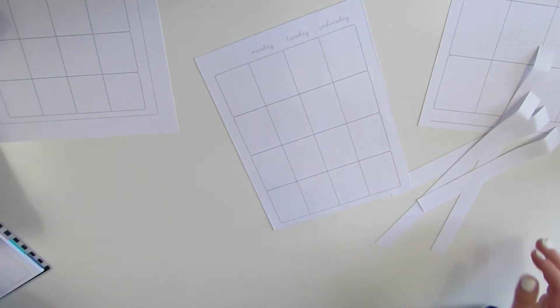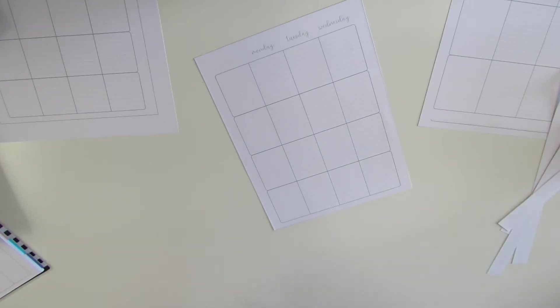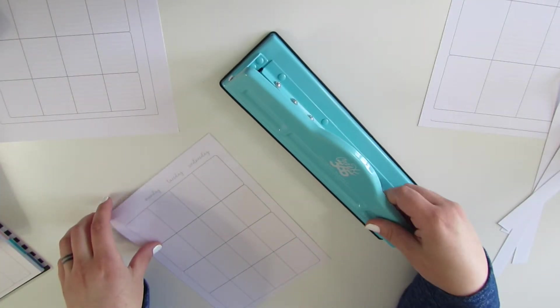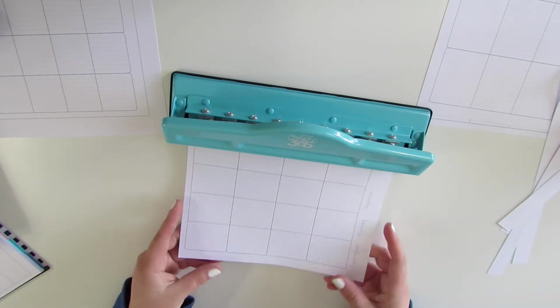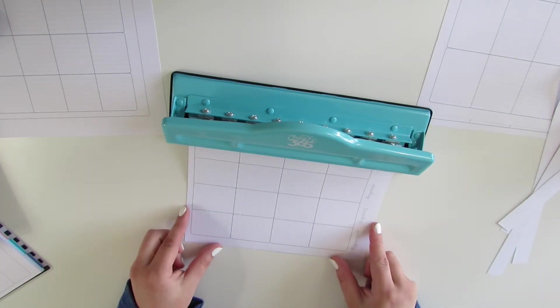And then you use your arc punch of some sort. I have the one that's by Happy Planner for the classic size paper, so it has lines where you can line up the edges of your paper.